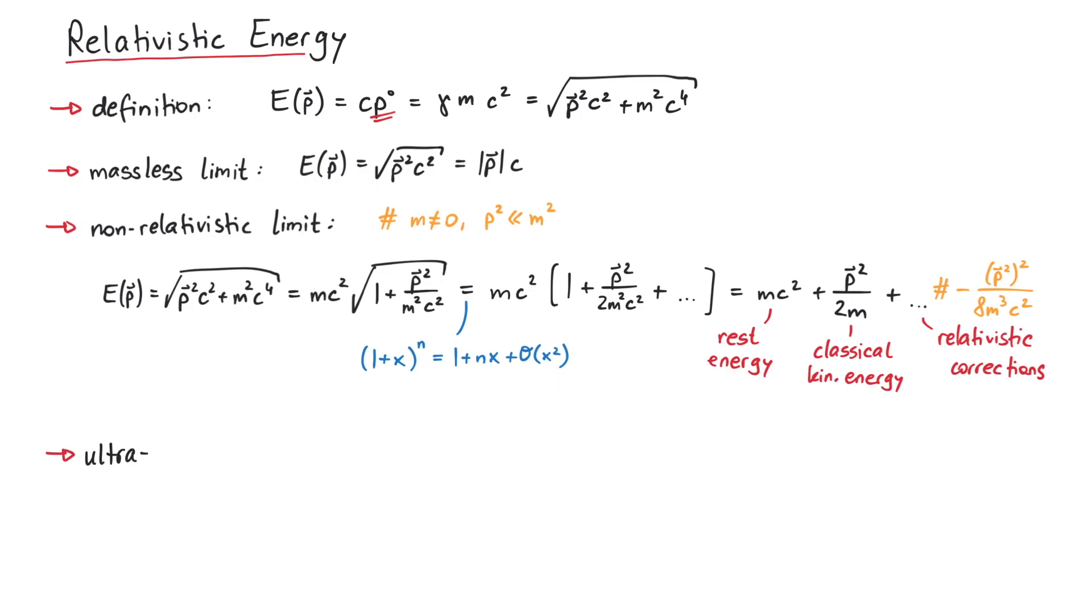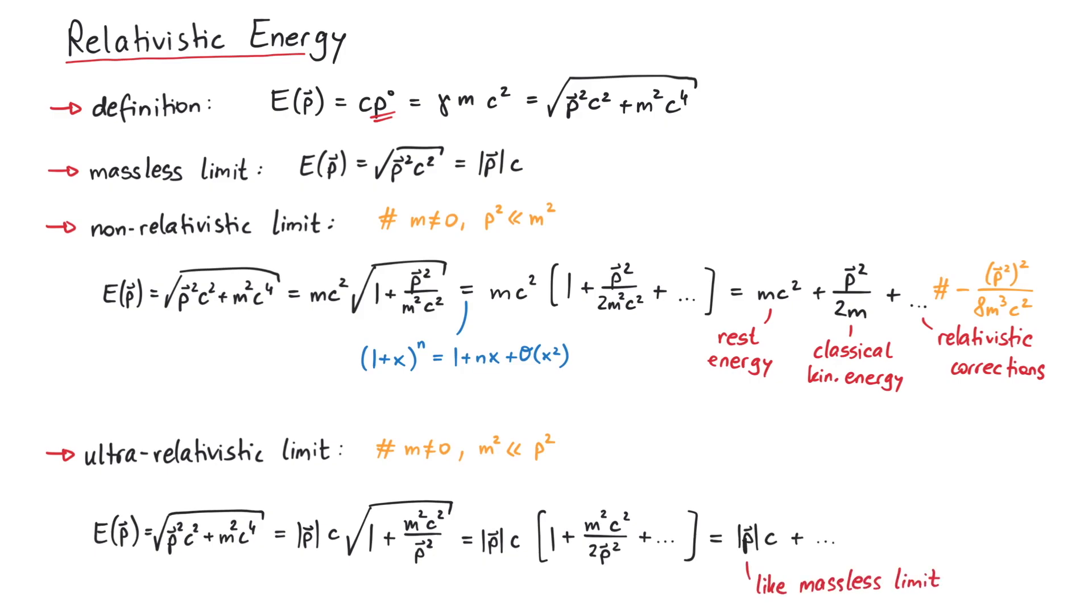In the so-called ultra-relativistic limit, where the particle is massive but really fast, we can write the square root like this. Now the ratio of mass over momentum is a small quantity and we can do a similar Taylor expansion. The resulting leading order term is pc, which looks like the energy of a massless particle. However, it is not completely like a massless particle, since we do have correction terms. But the thing to remember is that ultra-relativistic particles have energies similar to massless particles.